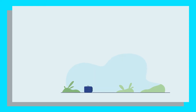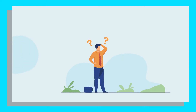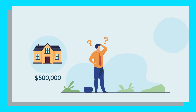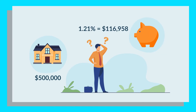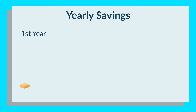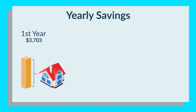You might be wondering how much difference it could make in the long run. On a $500,000 home loan, a savings of 1.21% equals $116,958 over the 30-year term. And if we break that up into yearly savings, just in your first year alone, you could be saving $3,703.